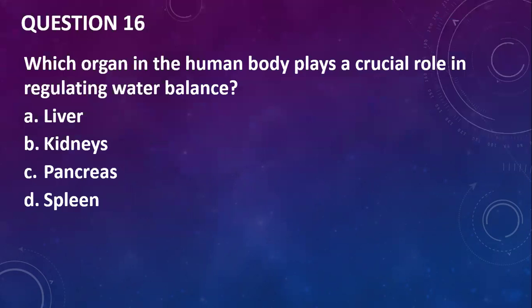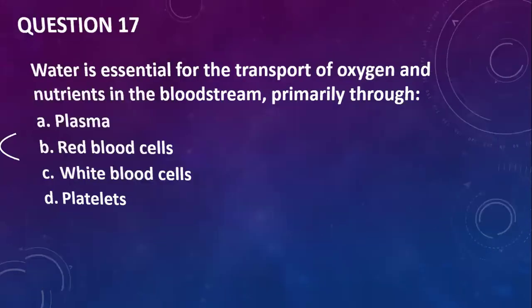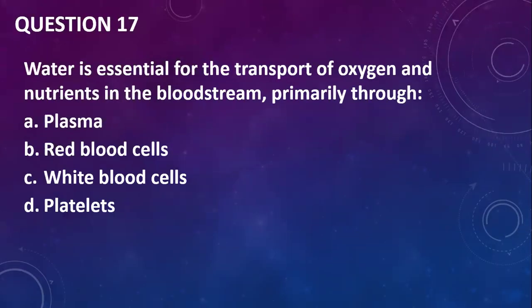Question sixteen: which organ in the human body plays a crucial role in regulating water balance? You have liver, kidneys, pancreas, and spleen. I will go with kidneys. Question seventeen: water is essential for transport of oxygen and nutrients in the bloodstream — that's true. The liquid part of blood is plasma. I will go with plasma.